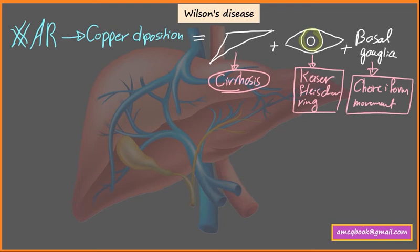...please focus on the movement disorder because it is significant in Wilson disease. This combination of liver cirrhosis, Kayser-Fleischer rings, and movement disorder directly means Wilson disease for the AMC exam.